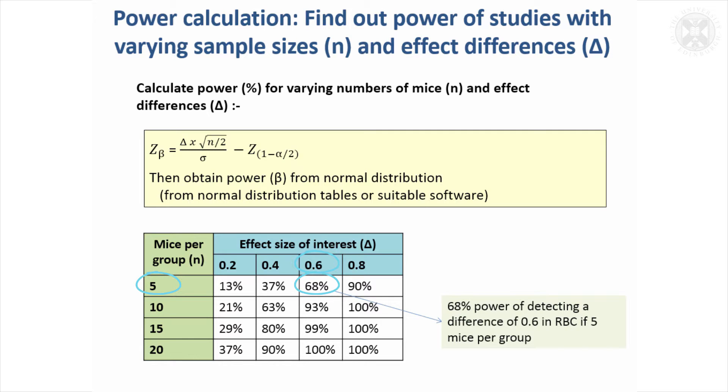So you'd have a 68% chance of getting your results significant, 32% chance that it wouldn't be significant. But that quickly increases with the number of mice, and by the time you've got 10 mice, it's quite an acceptable power.